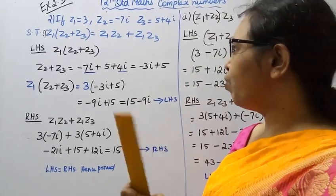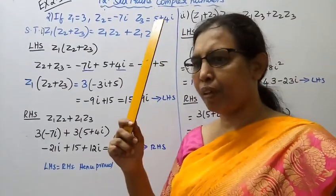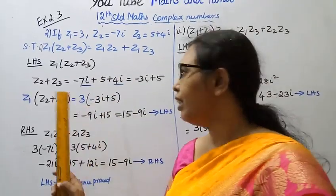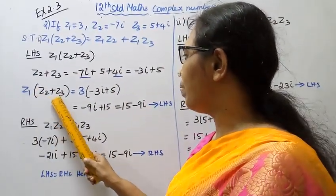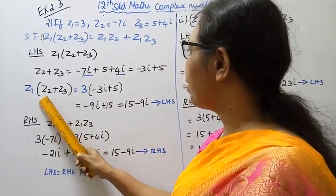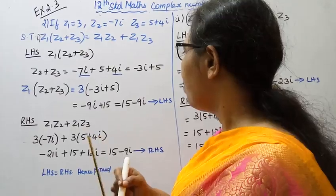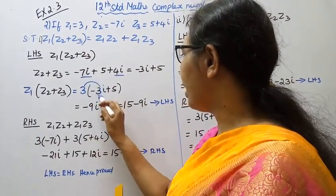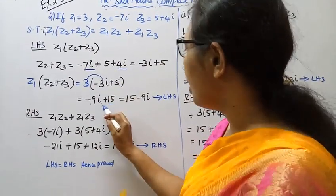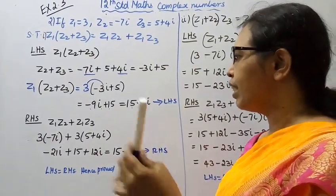Now multiply Z1 bracket Z2 plus Z3, that is 3 into (5 minus 3i). 3 into minus 3i equals minus 9i, 3 into 5 equals 15. So left hand side equals 15 minus 9i.